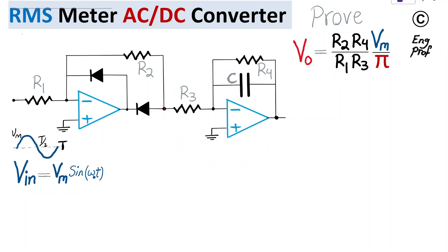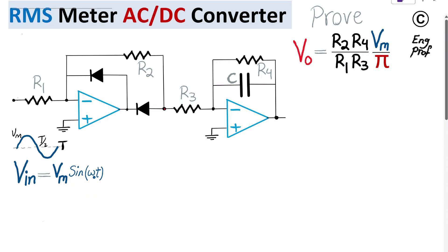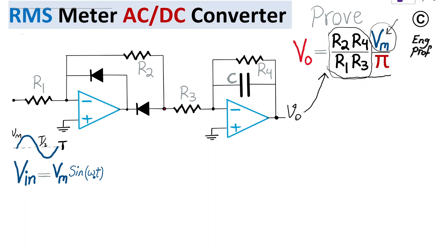If the components are selected properly, assuming the input is a sinusoidal voltage with period T, then the output voltage of the circuit can be shown to equal a constant or DC value defined by these components — specifically, four resistors in the circuit times the peak input voltage Vm, divided by pi.